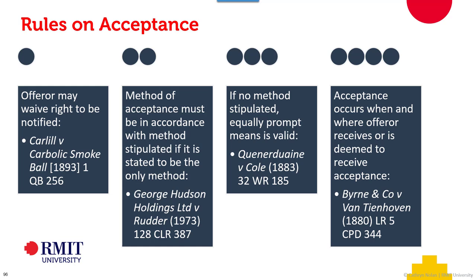Acceptance occurs when and where the offeror receives or is deemed to receive acceptance. So if I am here in this classroom and on Gumtree somebody in Queensland has accepted my offer of a guitar pedal, where does acceptance happen? When it's communicated to me, perhaps. It's an instant form of communication — instant forms of communication actually just reflect the general law. So it's at my end.